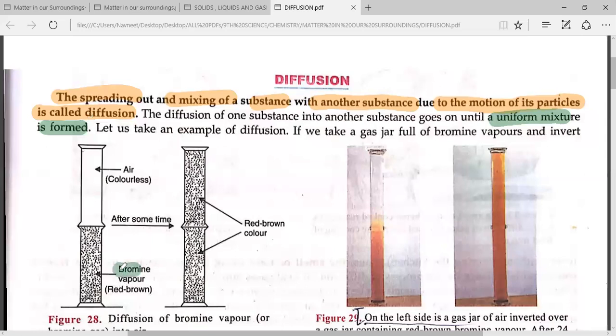You have bromine vapors, which are reddish brown, and on top you have air, which is colorless. Now after some time, you will notice that the whole beaker or vessel has become reddish brown in color. What is the meaning of that? The air and bromine have been diffused and mixed.